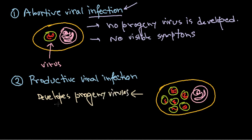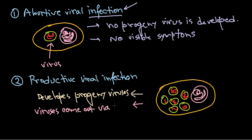Once the progeny viruses develop, they need to be released outside to infect other cells. The release can be of two types: via cell lysis or host cell killing, or via membrane budding. In this productive case, the virus comes out via membrane budding — through the membrane of the host cell.